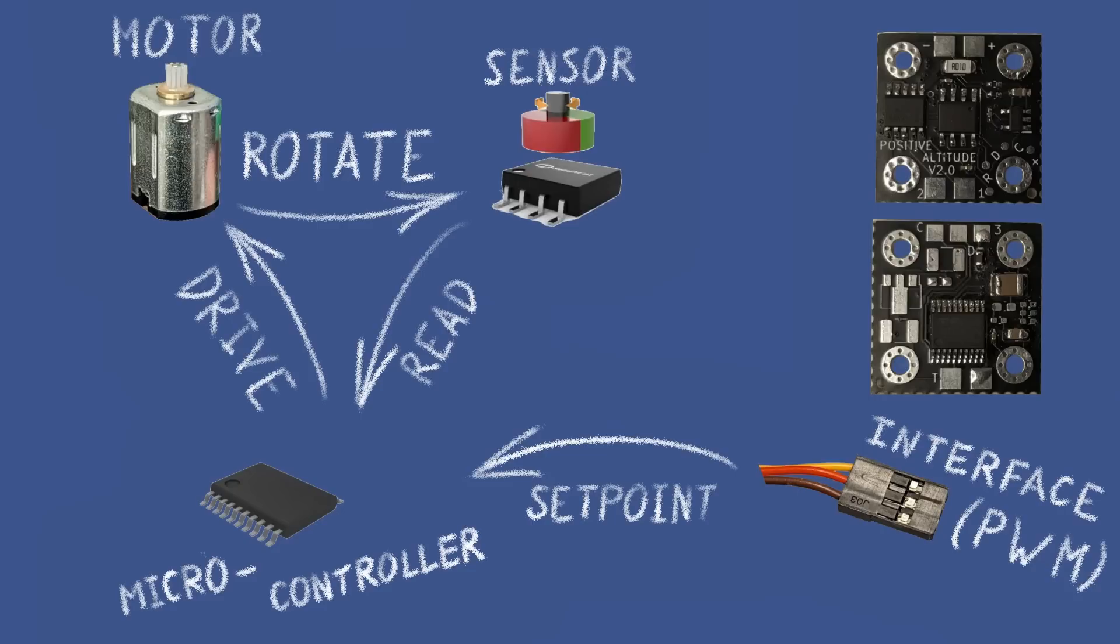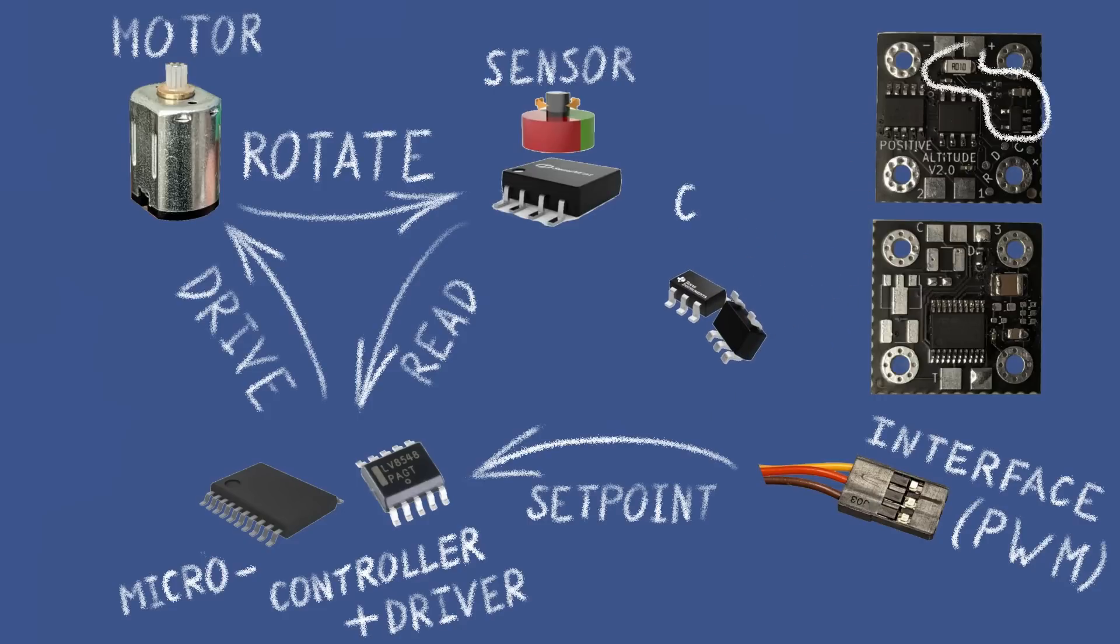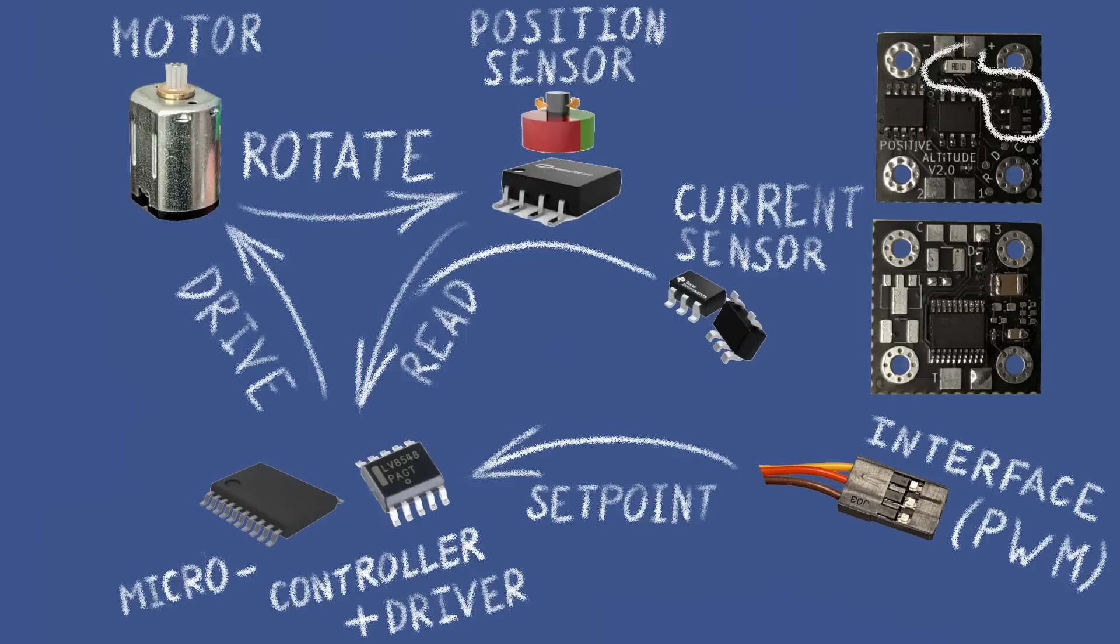However, most microcontrollers are not designed to handle the high current required for the motor, so we also need to add a motor driver to fix that. This driver provides up to 12V and 2A for the motor. This circuitry here is a current sensor. Initially, I added it for safety measures only, but lately I realized that with this current sensor, I can build a far more advanced control system. We will get to this later. For now, just keep in mind that we have this additional sensor here.